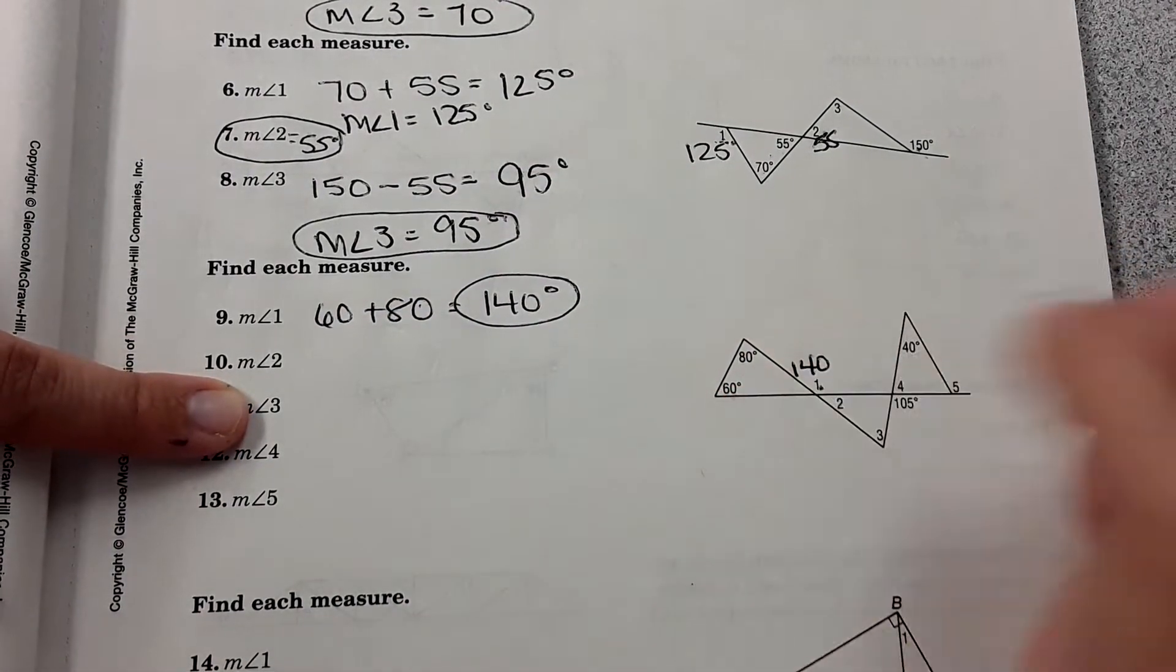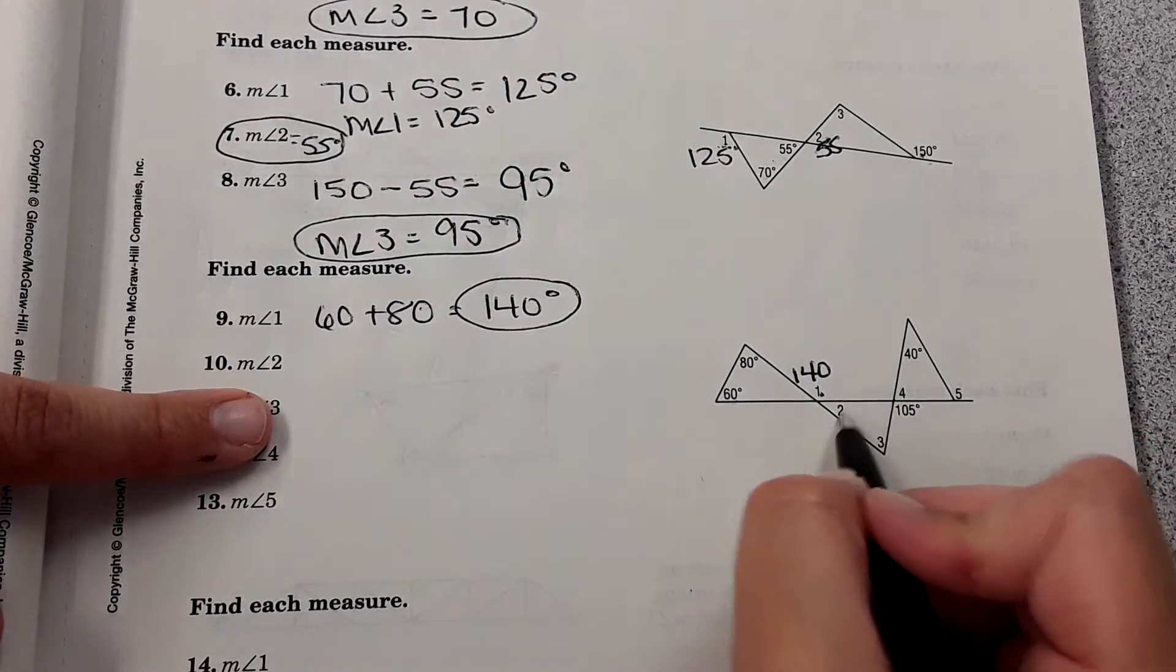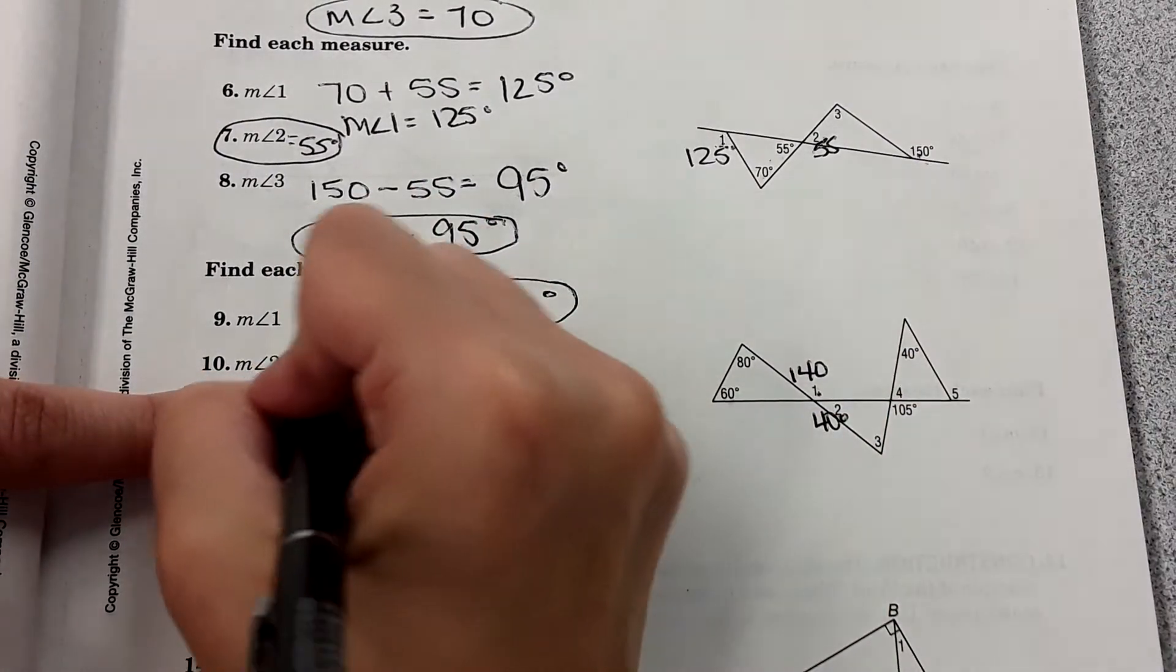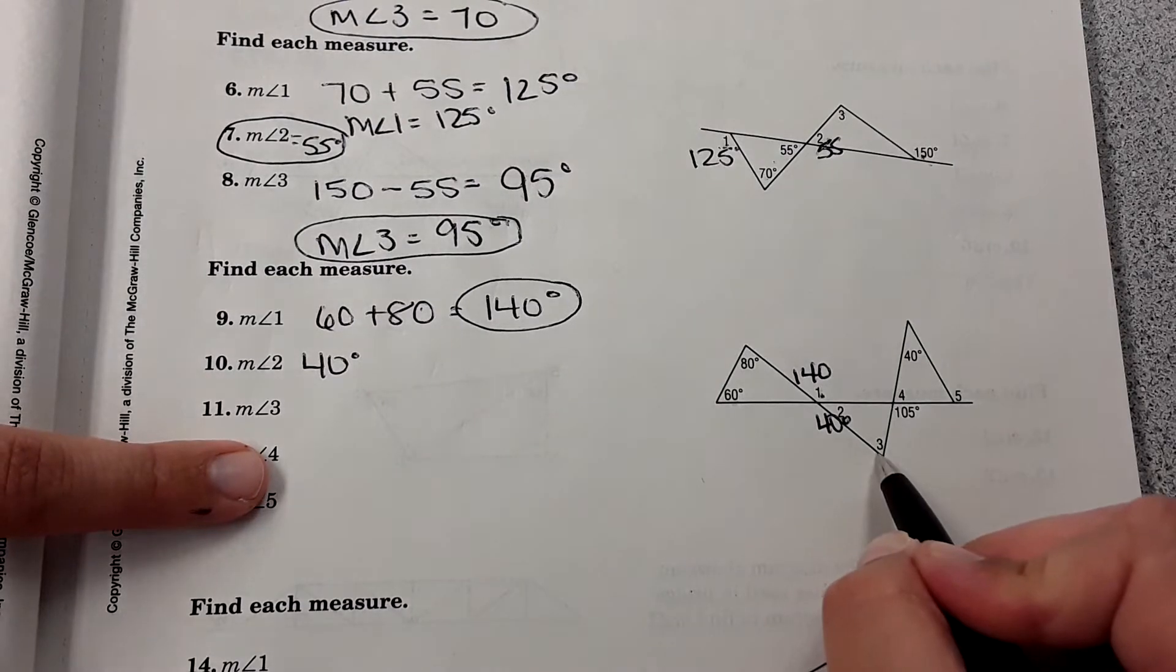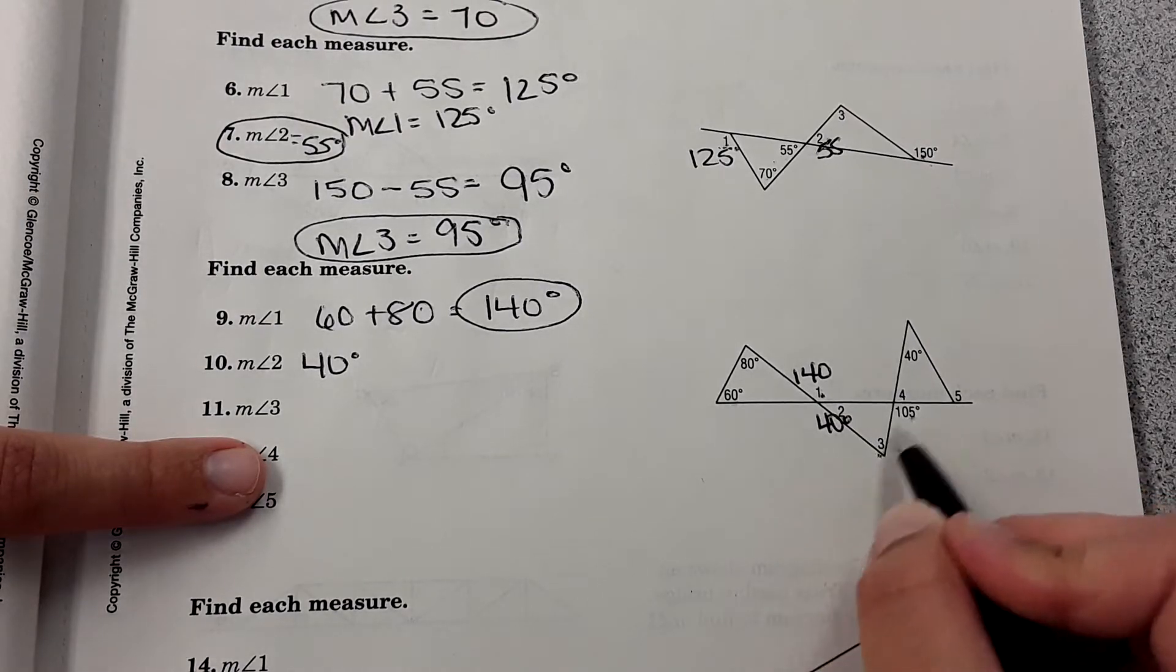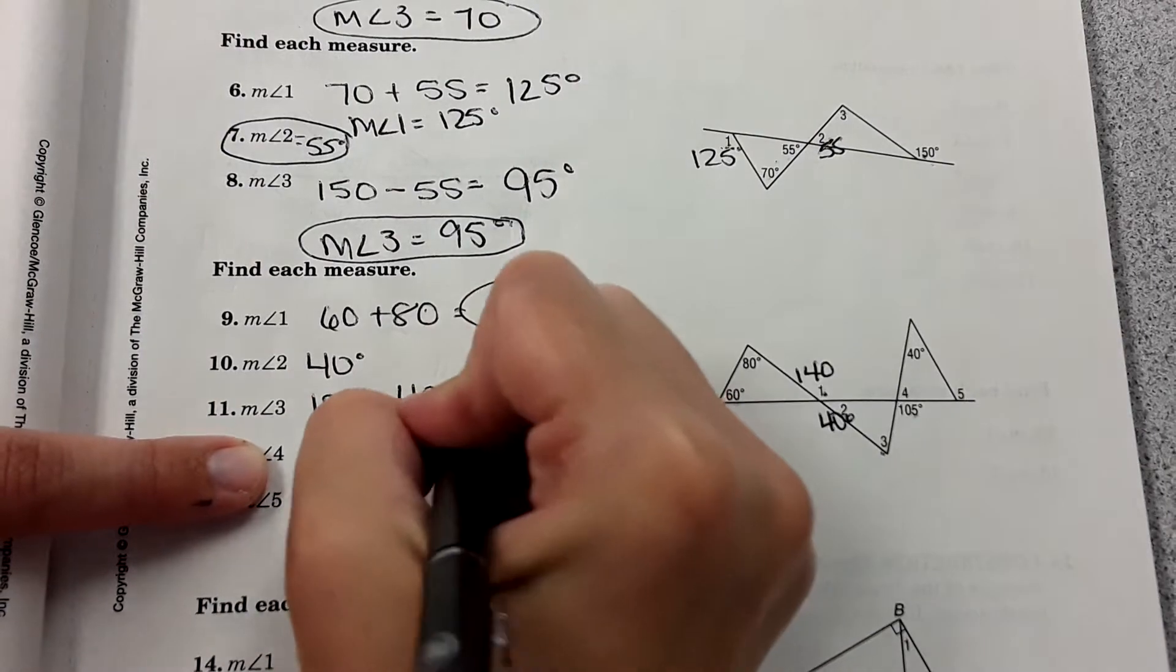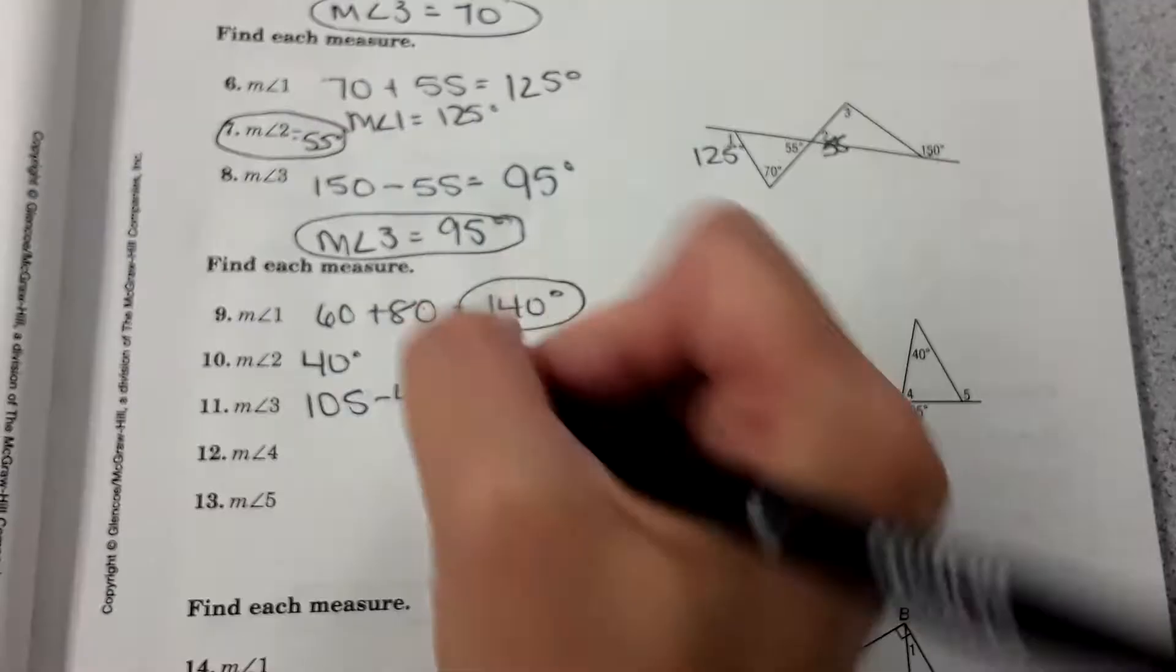And I'm going to write that down there because it'll help me figure out the other angles. Measure of angle two forms a linear pair with one, so that must be 40 degrees. Measure of angle three, well I have the exterior angle here, 105, so these two must add to 105. So I can do 105 minus 40 to get 65 degrees.